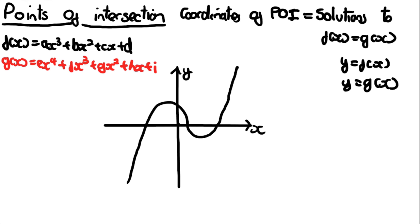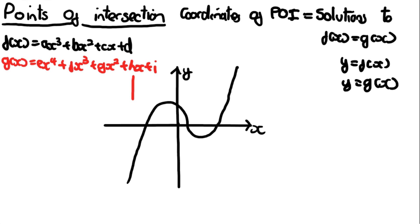Let's draw a random quartic. Don't be confused by the g and f used both as function names and as constants in the quartic equation — they have nothing to do with each other. I've just used the same letters; these are just constants.